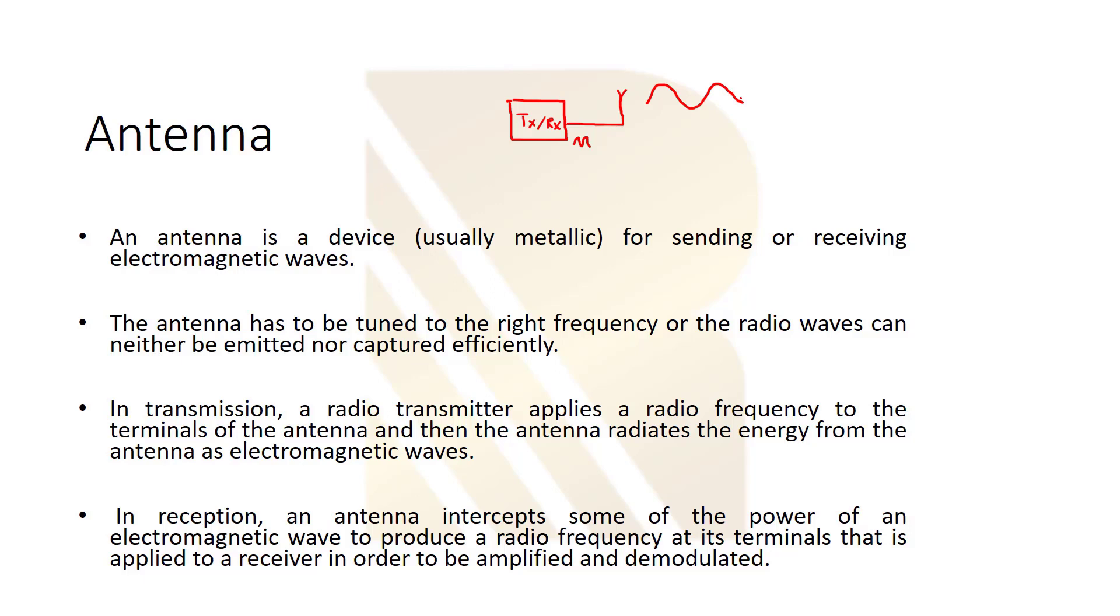And vice versa, in reception antenna intercepts some of the electromagnetic wave. When electromagnetic wave comes to the antenna, it intercepts it and produces a radio frequency voltage or current at its terminal, and this current or voltage is applied to receiver in order to be amplified and demodulated.